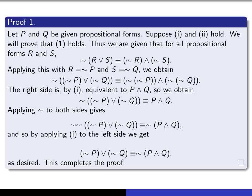And now I'm going to make a little bit more explicit what I mean by 2, just to remind the reader. Thus we are given that for all propositional forms R and S, we have this. That's just a statement of this 2 here.